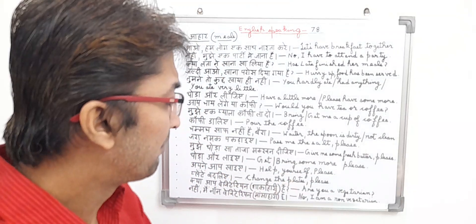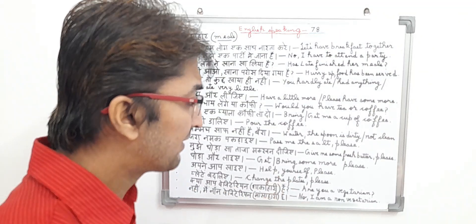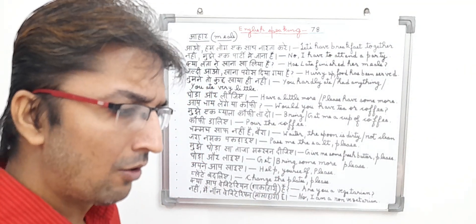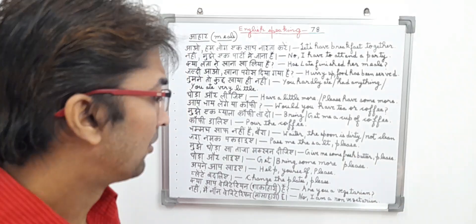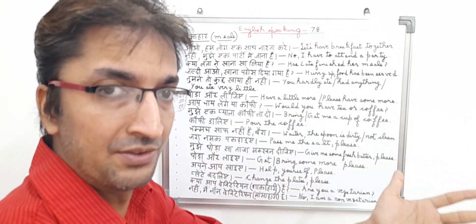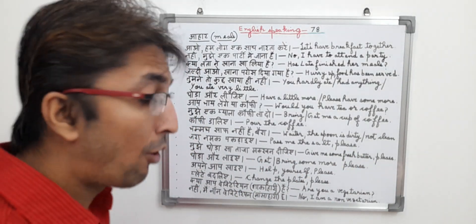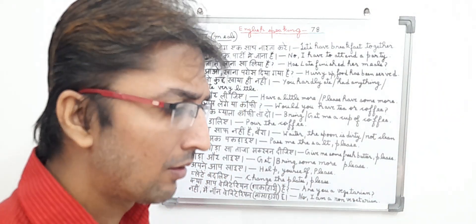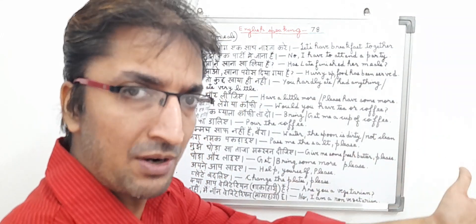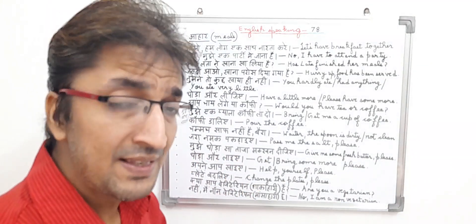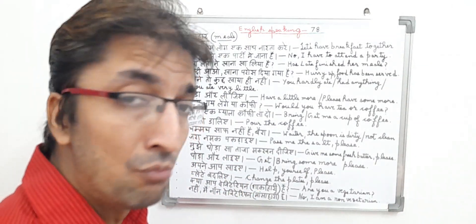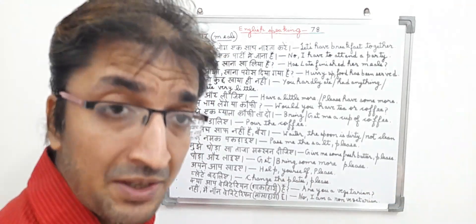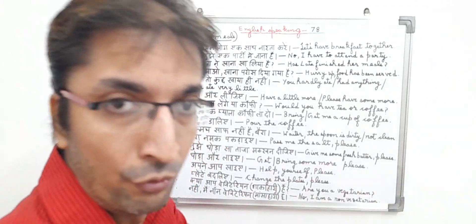Thoda aur laiye. In English, it means 'Bring / get some more, please.' The sentence basically means the person is requesting another person to bring him some more food. He is eating and wants more — 'Thoda aur laiye' means 'Get/bring me some more, please.' It is a request type and meal type sentence because he wants to have more food.